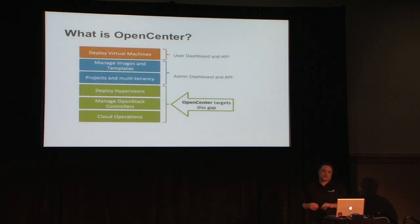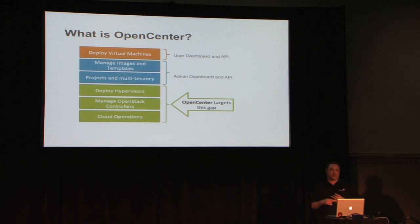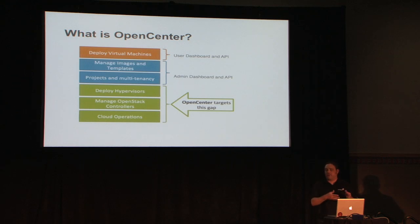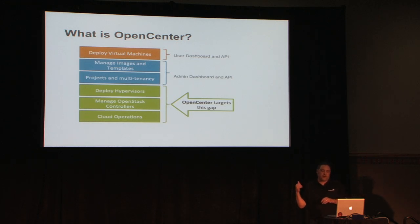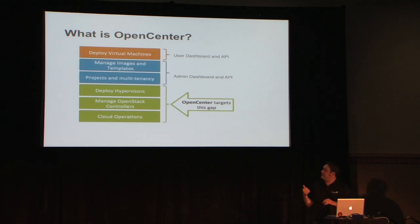OpenCenter specifically targets the deployment of hypervisors — we use KVM in private cloud — and the ability to manage OpenStack controllers. In our world, a controller is where all of the OpenStack services run. To get to an HA model, we came up with a controller model where all OpenStack services run on two hosts, including our database and everything else. Over time that'll probably split out as we see more scale deployments. We're not trying to cover areas that OpenStack already addresses — multi-tenancy, managing images and templates, deploying virtual machines — we lean on OpenStack for that, and there are already dashboards like Horizon for it.